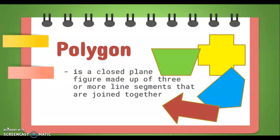So what is a polygon? A polygon is a closed plane figure made up of three or more line segments that are joined together. Let us break this down. First, a polygon is a closed figure, meaning all of its sides are joined together. Next, a polygon is a plane figure, meaning it is flat.